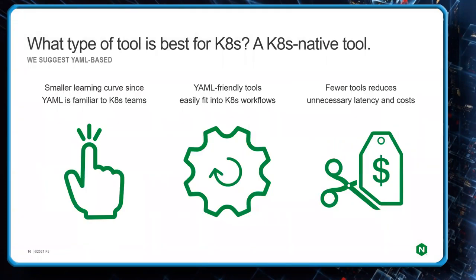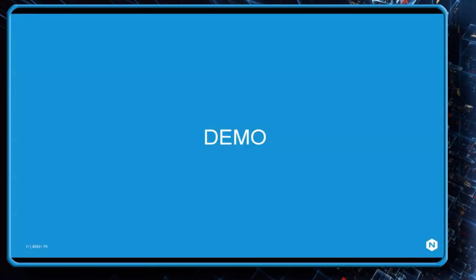For intra-service communication, if we're putting an API gateway or anything to facilitate policy enforcement there, it would generally be employed as a sidecar to individual pods. Those sidecars will each require their unique configuration — there isn't a single configuration you can push to all of them. So what type of tool is best for Kubernetes? The simple answer is a Kubernetes-native tool — one specifically designed for Kubernetes that can communicate using YAML, receive YAML instruction sets from Kubernetes, be deployed using Kubernetes-friendly tools like Helm, and communicate with tools like kubectl.